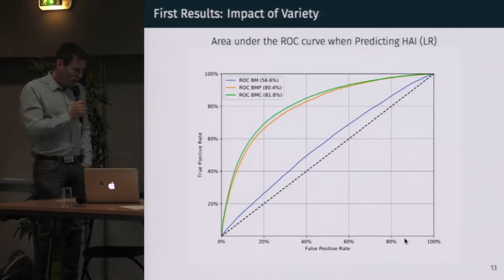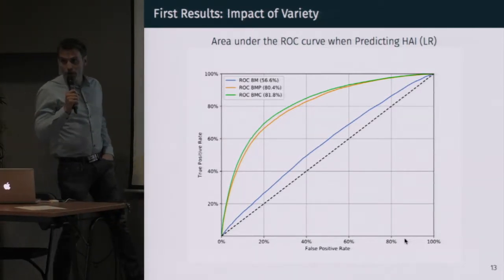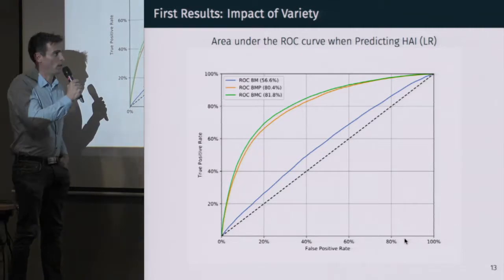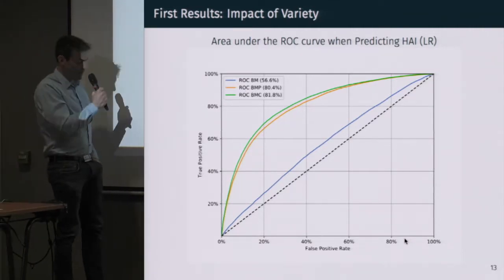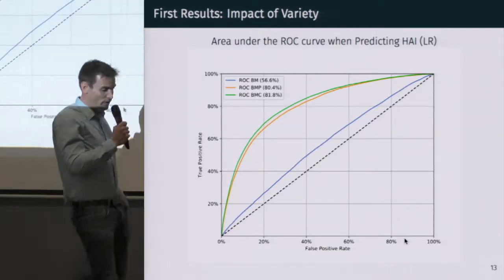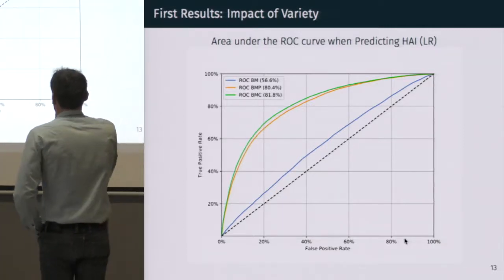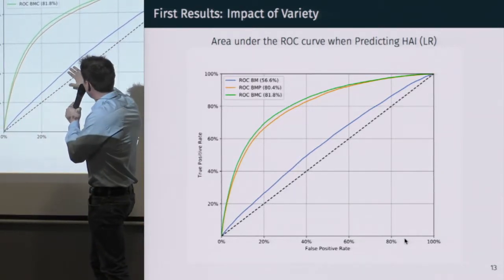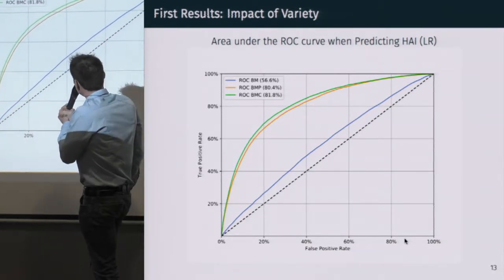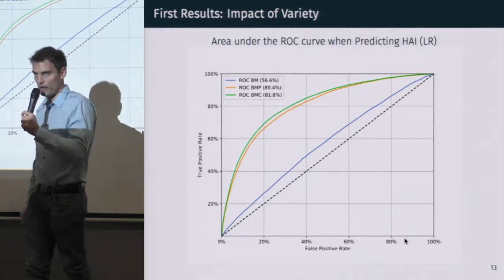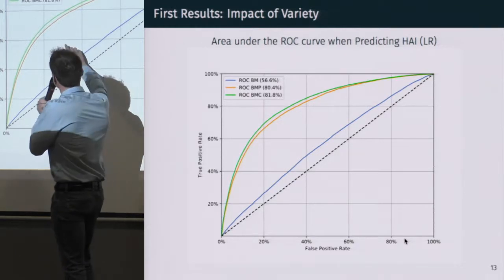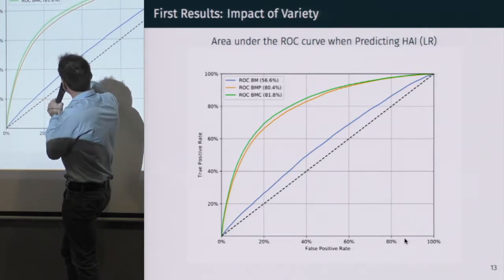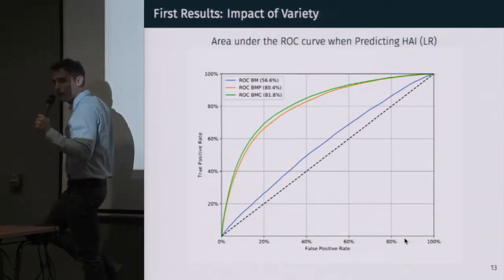Here are the first results. This is a ROC curve — the higher the curve, the more accurate the model is in making predictions. If you are along the diagonal, your model is basically just a random guess. What we can observe is that using just a set of basic features plus the MRCI aggregate score, we are only slightly better than a random guess. Whereas when we consider drug categories and detailed drug variants, there is a significant increase in accuracy for making predictions.